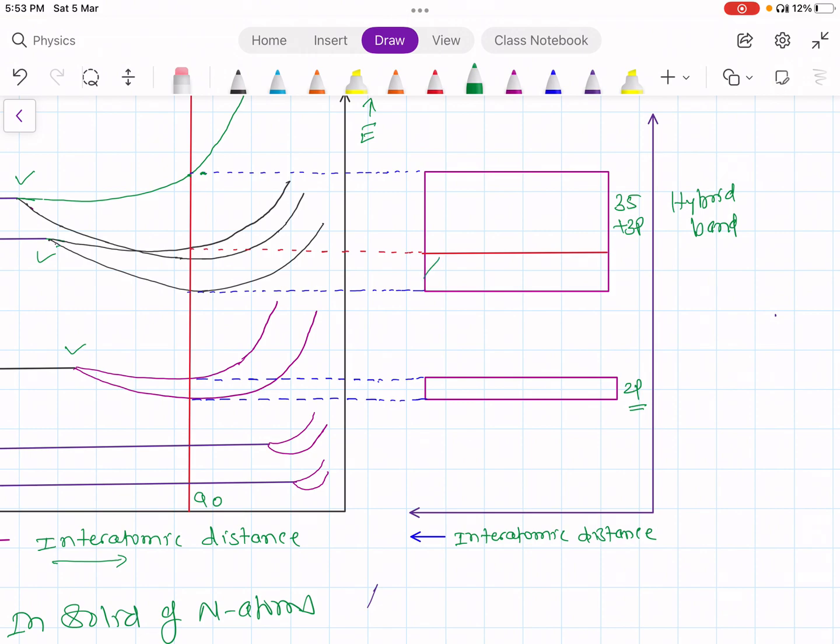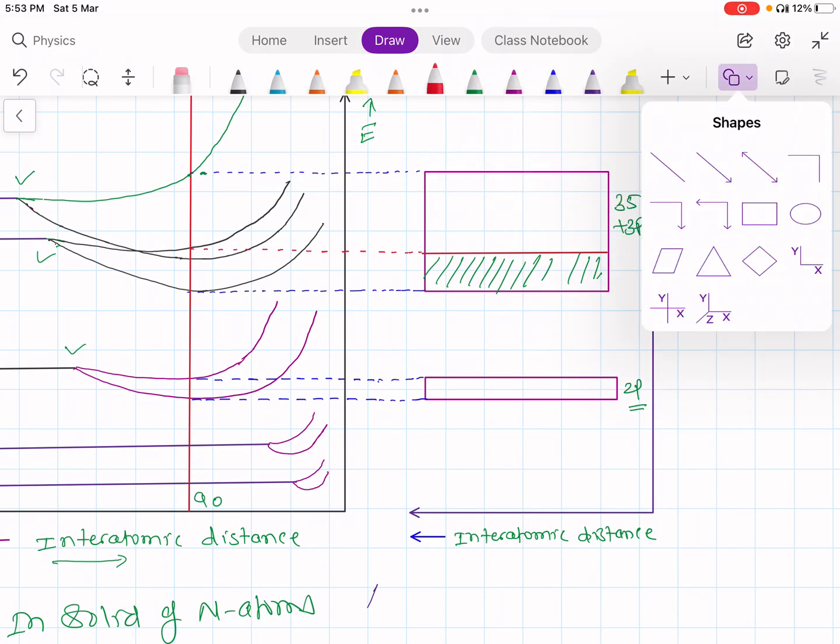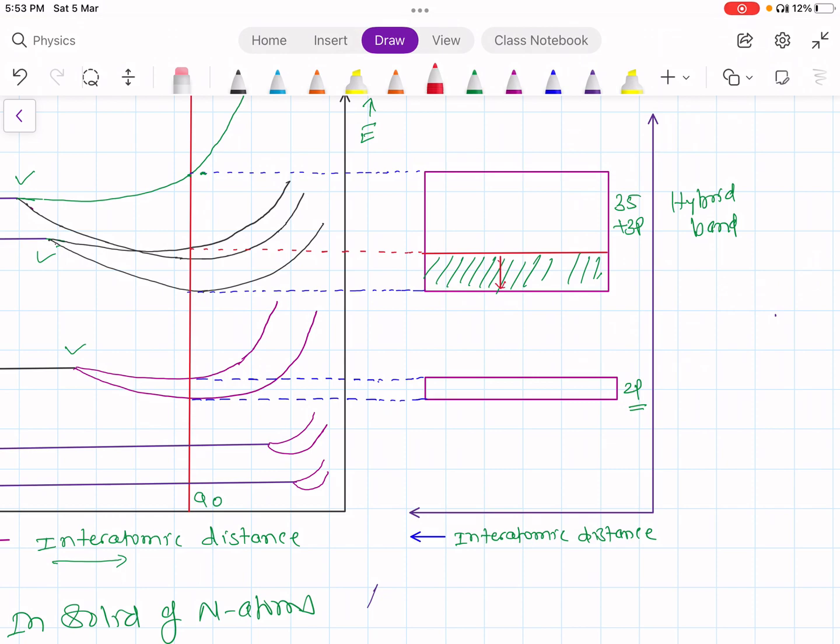In this case, only 1/4th is filled. So this is filled. And this is empty. Empty energy levels are 3n. Filled energy levels are 1n. So because of this partial overlapping of 3s and 3p band, composite band is formed. And in this composite band, lot many energy levels are free. So even a small electronic excitation can give enough kinetic energy to the electrons to jump into higher vacant levels and produce electric current.